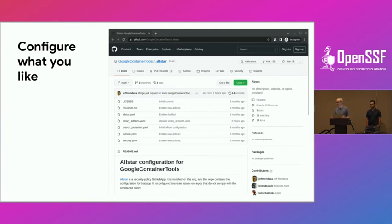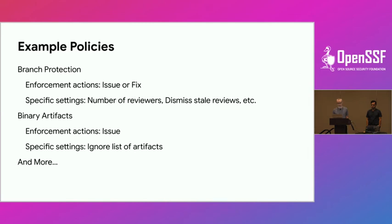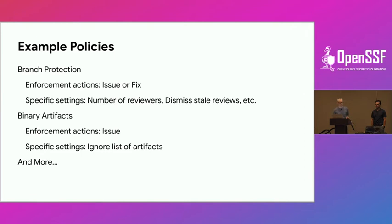You can turn all the checks on and off and decide what enforcement action you want, and which repos to enforce. For example, Ann earlier today covered security.md and having a security policy. AllStar and Scorecard can both check for that. But you may only want to enforce that on public repositories, since private repositories don't need that. You can configure AllStar settings to only alert for each policy based on which type of repository you want it to check.